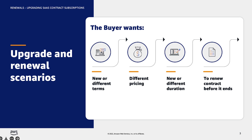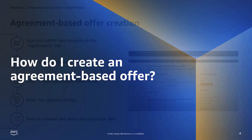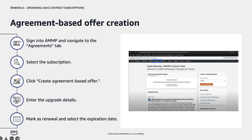To create an upgrade or renewal offer for a SAF contract subscription, the seller must create an agreement-based offer using the buyer's active subscription. Agreement-based offers are created in the Agreements tab of the AWS Marketplace Management Portal, or AMMP, for buyers that have an existing subscription to your SAF contract product in AWS Marketplace.